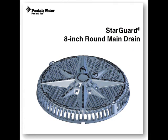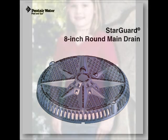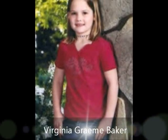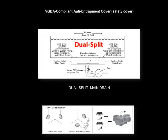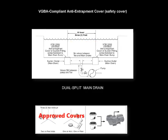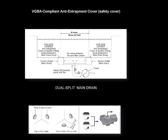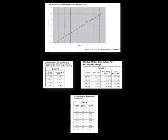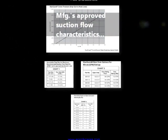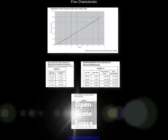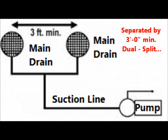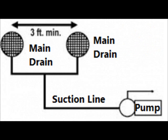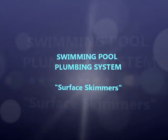After a young girl named Virginia Graham Baker had drowned in a hot tub by being trapped on a defective main drain cover, an act was passed that now mandates that all suction inlets entering a swimming pool shell must be outfitted with an approved safety cover that correlates with the suction flow characteristic for open grate space per the manufacturer's published values. Additionally, these devices must also be plumbed into a dual split conformity separated by a three-foot minimum distance.